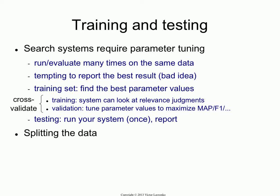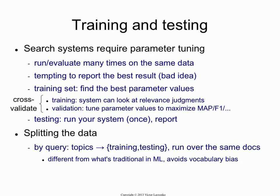What's interesting about information retrieval is the way you do the splits is a bit different from most of machine learning. In machine learning, you would split your data instances into training and testing sets. In information retrieval, the convention is to keep the data the same but split the queries — similar to saying that in a multi-class classification problem, some classes become training classes and others become testing classes.